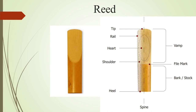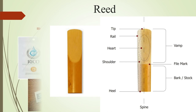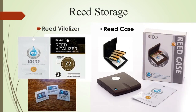These numbers represent the reed's hardness. Lesser the number, softer the reed; higher the number, harder the reed. Softer the reed, easier to blow; harder the reed, more difficult to blow. For beginners I would recommend starting with 1.5 or 2, and going higher after six to eight months once you have trained your mouth grip around your mouthpiece, which we call embouchure.